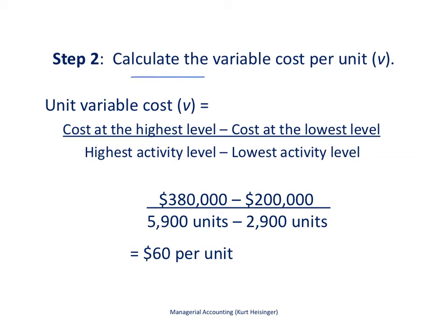To calculate the variable cost per unit, we are going to take the cost at the highest level in the numerator minus the cost at the lowest level, and then we are going to take the highest activity level in the denominator and subtract the lowest activity level. And that gives us then $380,000 minus $200,000 divided by 5,900 units minus 2,900 units, and again that comes from the previous slide.